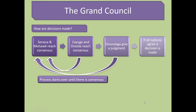What would happen is if there was a decision that had to be made, they would get together and meet as a council. If the Seneca and Mohawk reached a consensus on a decision, they would bring it to the Cayuga and the Oneida. If they reached a consensus, they would then bring it to the Onondaga. However, if any one of these groups disagreed with the decision, it would have to go back to the beginning again and the process would start over until all of the different nations agreed. That could be on decisions of war, decisions on hunting, treaties between the nations, and all sorts of different things.